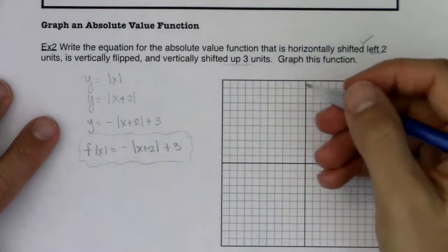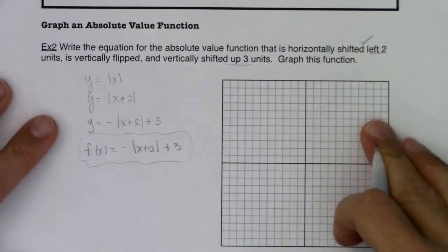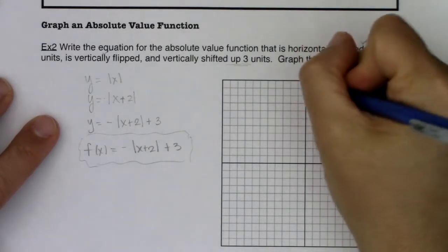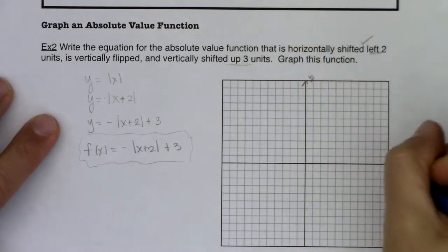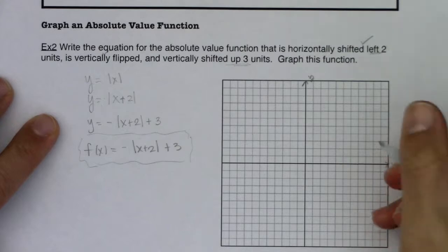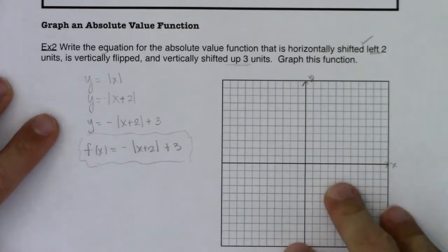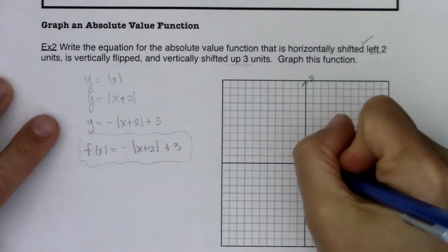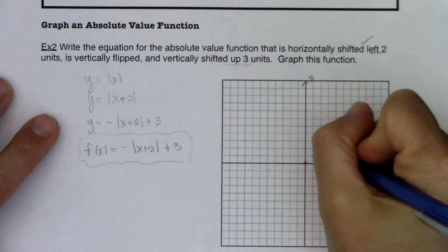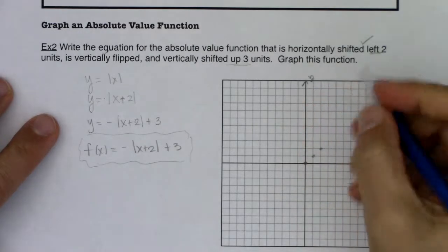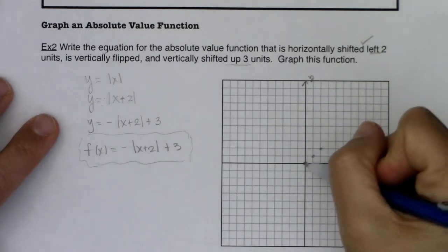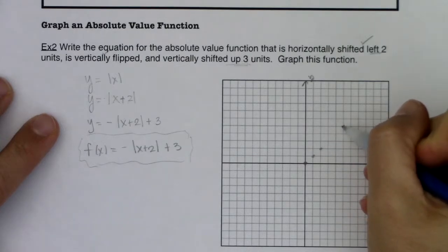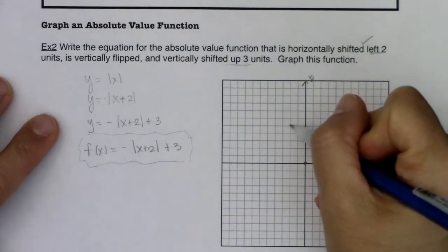All right, now it says graph this function. And you can use technology to graph this. But I just want to practice doing it on our own. I'm going to do a couple of examples or a couple of points with you. And then I will go check it on my graphing calculator, just to make sure I'm not making a mistake. If I was going to graph the original square root function, let me do 0, 0. Let me do 5, 5.